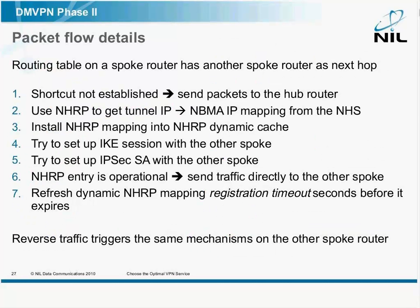Assuming that the routing table on a spoke router is set up properly and the next hop is the other spoke, what happens is when the packets start flowing, the shortcut is not yet in place. So the spoke sends the packets to the hub router. And until the shortcut is fully operational, the packets go through the hub. So even if the spokes can't establish a direct IPSec session, you don't lose any packets — you just overload the hub router.